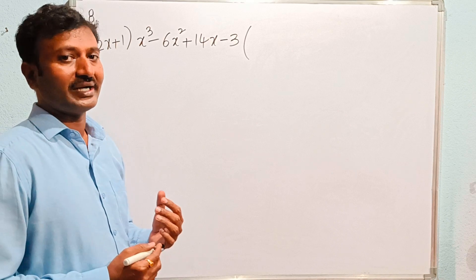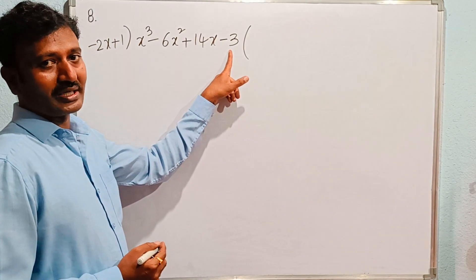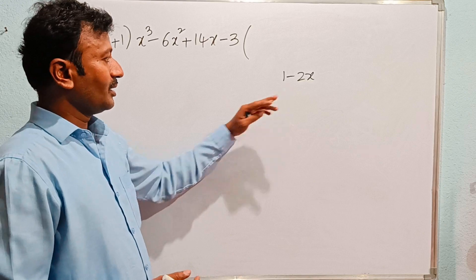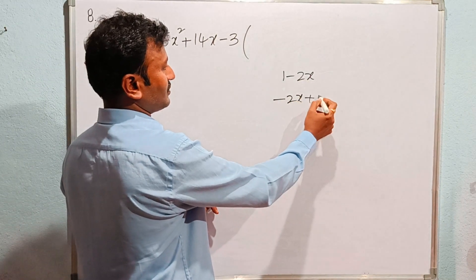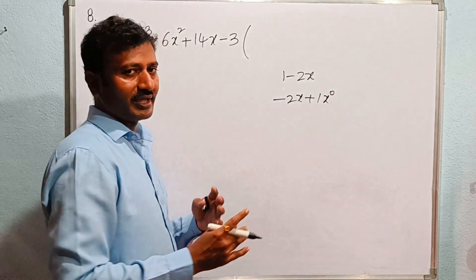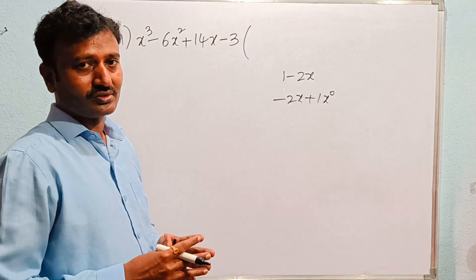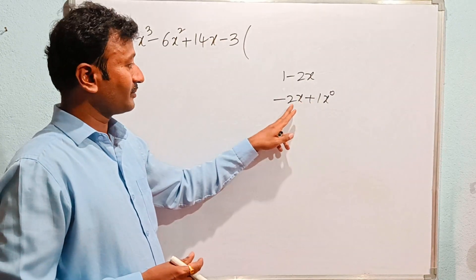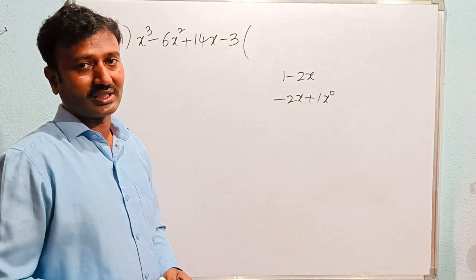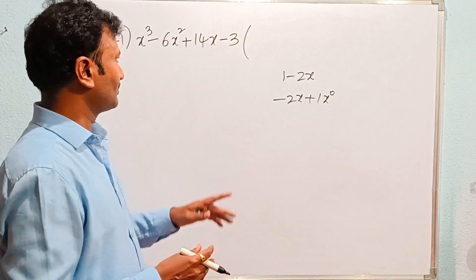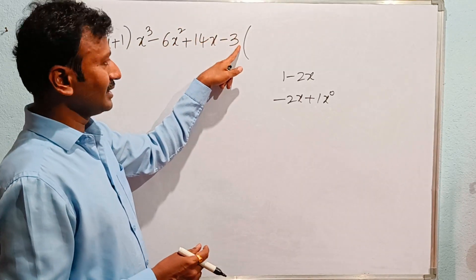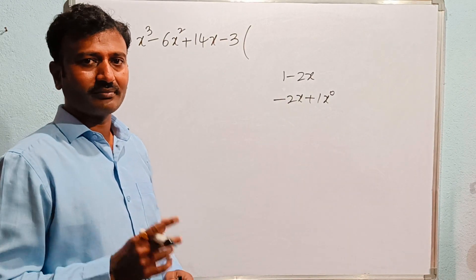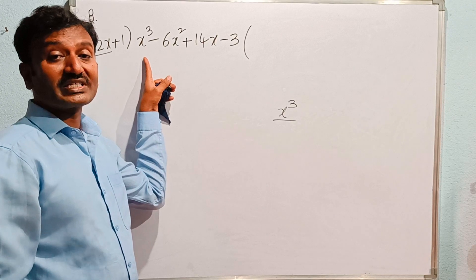Find the remainder when this polynomial is divided by one minus two x. We rewrite the divisor as minus two x plus one. The polynomial has a constant term with degree 0. We arrange the terms in descending order — degree 3, 2, 1, 0 — before dividing.